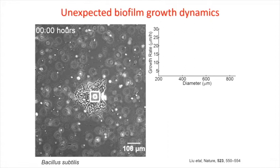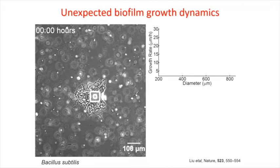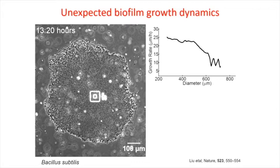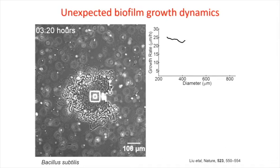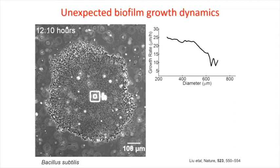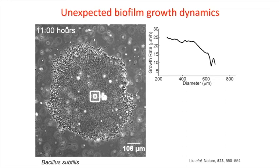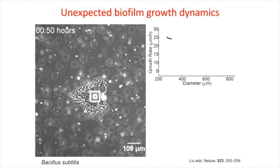The very first experiment we ran in the device gave a surprising result that ultimately ended up derailing the rest of my postdoc, and we're still working on it now. What you're seeing here is a Bacillus subtilis biofilm starting at the seeding point in the center of the chamber. Once the biofilm reaches a certain size, there's a transition from relatively constant growth to a pulsing of growth where you get oscillations in biofilm expansion. My background is from engineering and I spent time engineering oscillations in bacteria, so when I saw this, I couldn't ignore it.